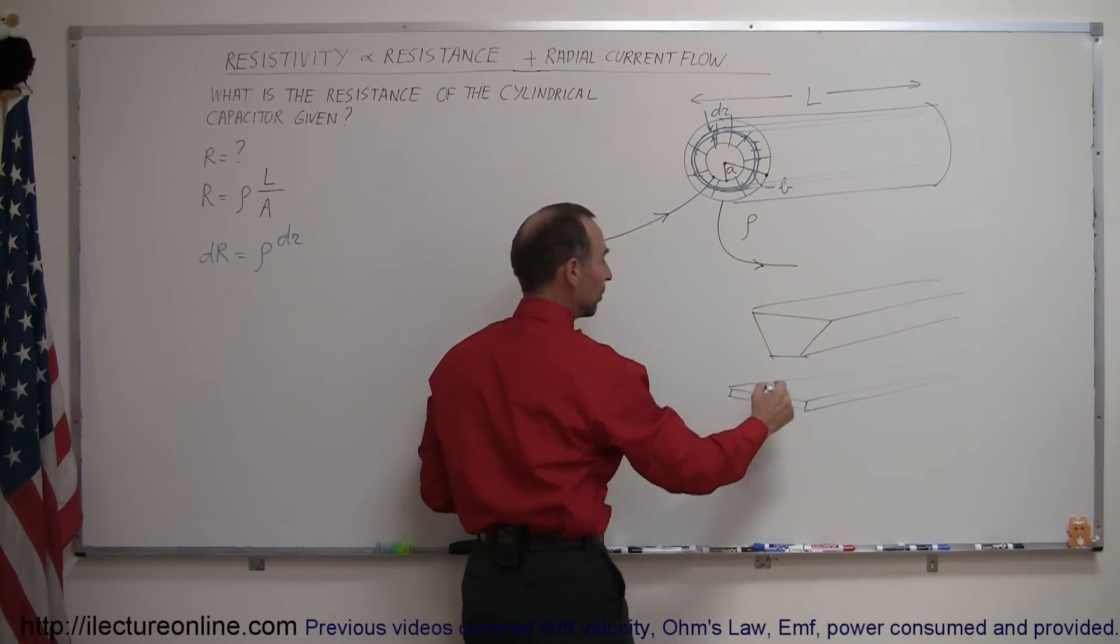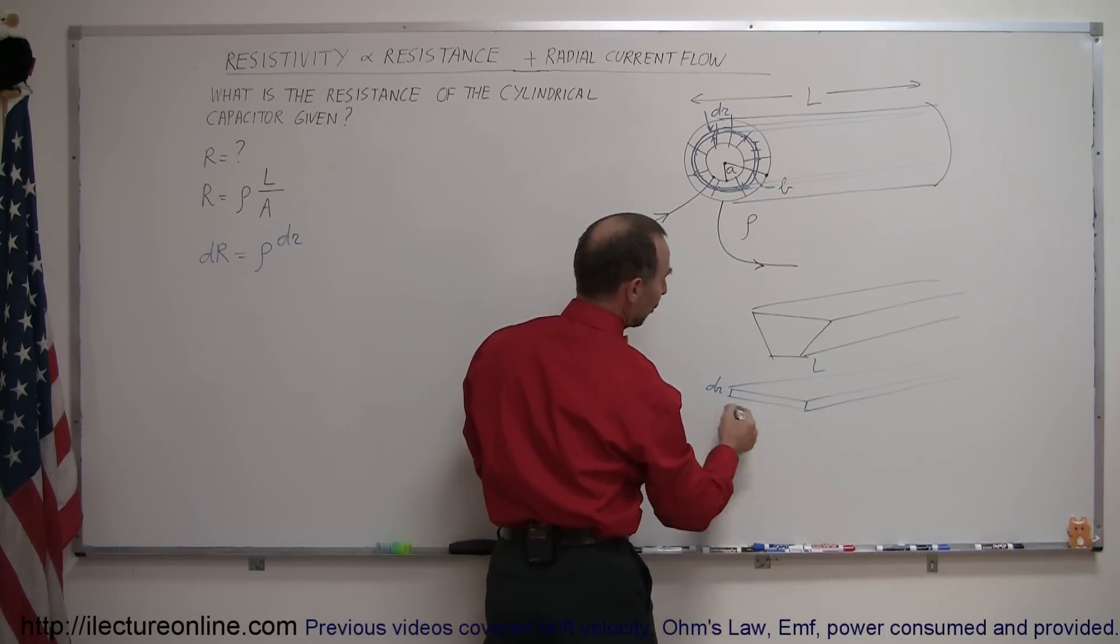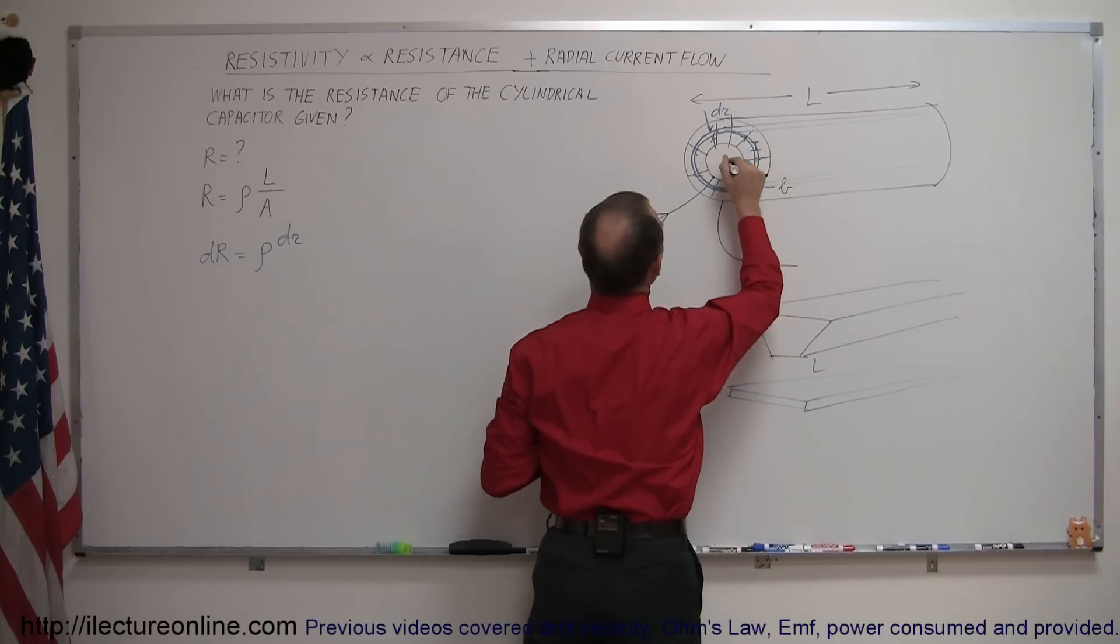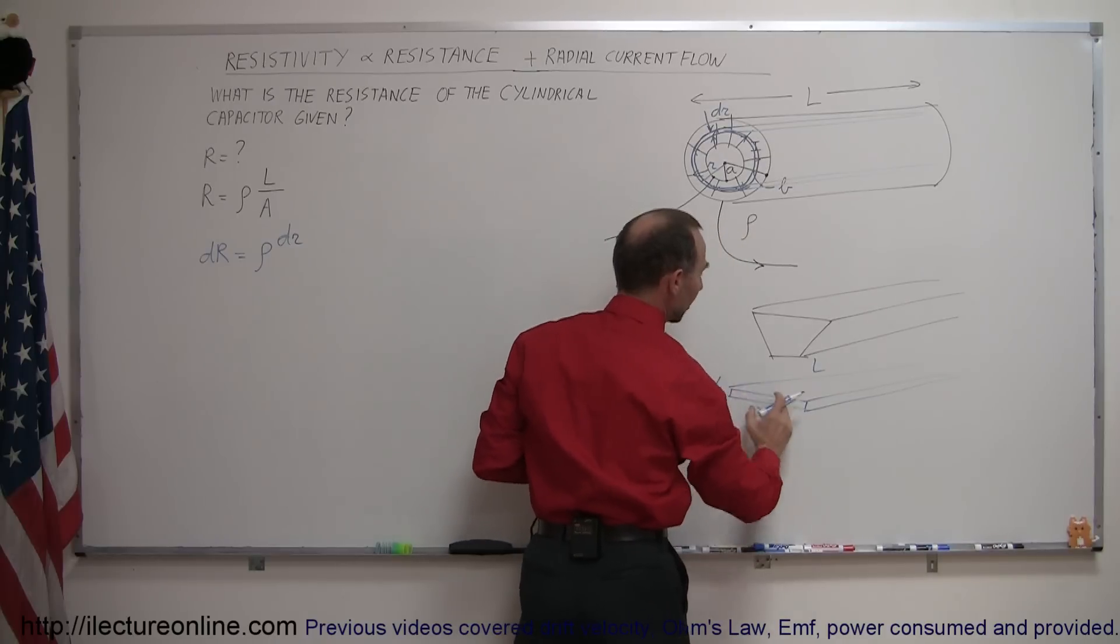I would get a rectangular shape where you have L for the length. The thickness here would be the dr. And then the width here would be the circumference of that. And that would be a distance r away from the center so that would be 2 pi r times the thickness dr times the length.